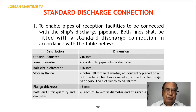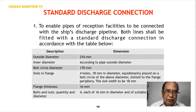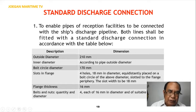Standard discharge connection. Number one: to enable the pipes of reception facilities to be connected with the ship's discharge pipeline, both lines shall be fitted with the standard discharge connection in accordance with the specified table. The outside diameter is 210 millimeters, inner diameter according to pipe outside dimension, and the bolt circle diameter is 170 millimeters.